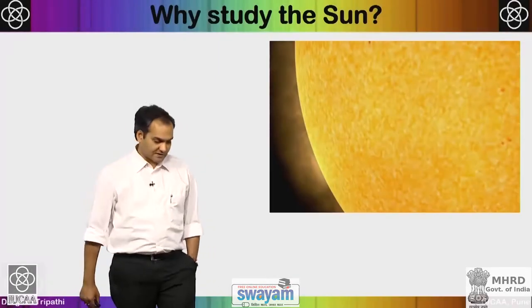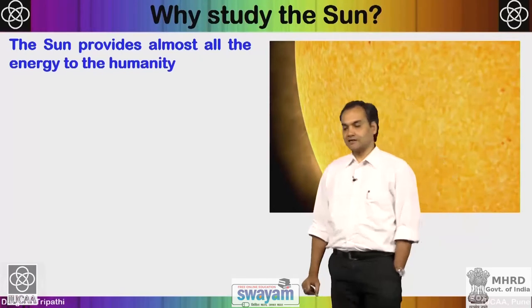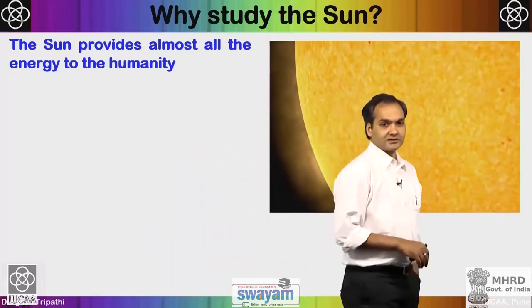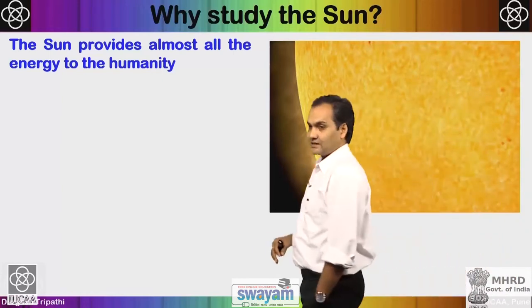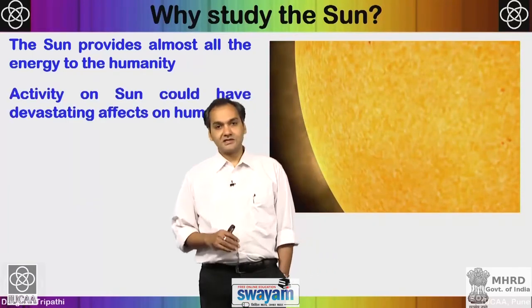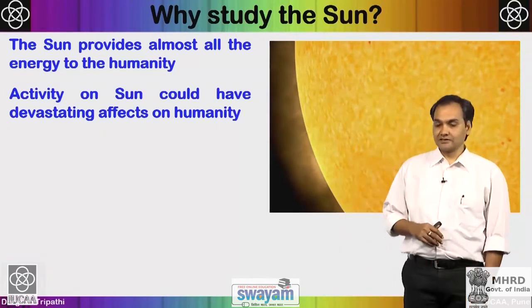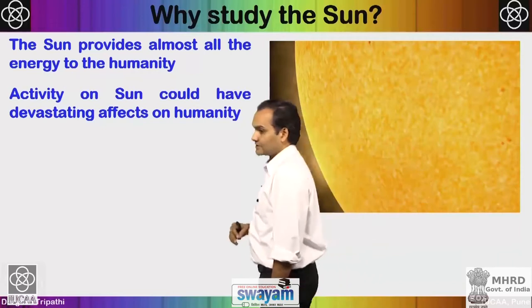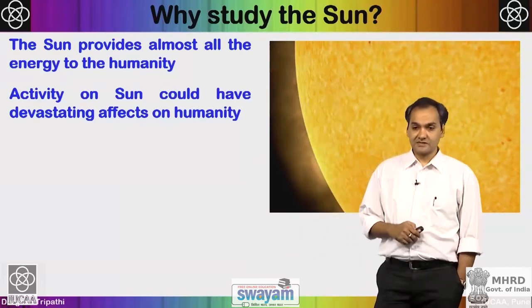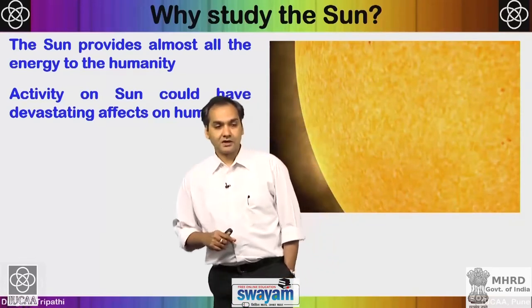Let us start by asking: why do we study the sun? The first answer is that the sun is the only source providing almost all the energy to humanity. All plants, vegetation, animals, and ourselves sustain life because of energy provided by the sun. Any activity on the sun could also be devastating — for example, eruptions send energetic particles through the interplanetary medium into Earth's atmosphere, potentially causing electric power blackouts and satellite communication failures.